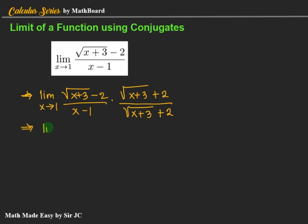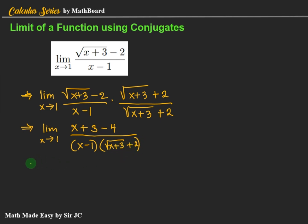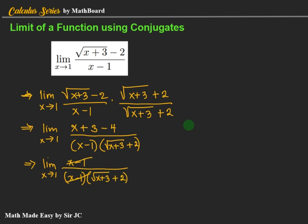We have the limit as x approaches 1 of: √(x + 3) times √(x + 3) gives (x + 3), and negative 2 times positive 2 is negative 4, all divided by (x − 1)(√(x + 3) + 2). Simplifying the numerator: x + 3 − 4 = x − 1. So we have (x − 1) / [(x − 1)(√(x + 3) + 2)], and we can now cancel (x − 1).